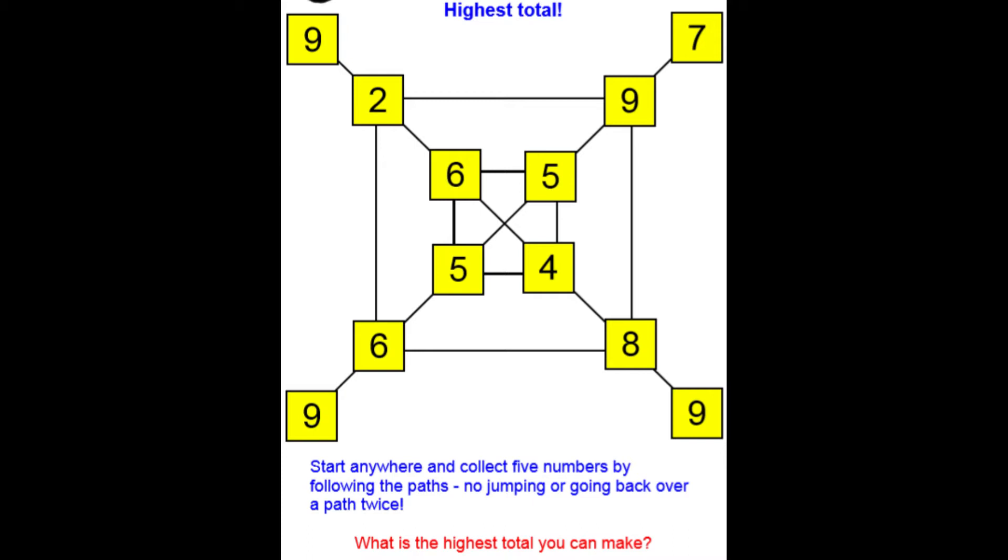As it says at the bottom, you can start anywhere and collect five numbers by following the paths. You can't jump or go back over a path twice, so you can't go back the way you came. The aim is to go around and collect five numbers, add those five together, and what is the highest total you can create? I've had a little go myself and I got to 37. However, I think if I tried it for a little bit longer, there might be a higher total there. So have a go, email in what you find. Maybe you can find the lowest total as well, and what's the difference between the two totals that you find.